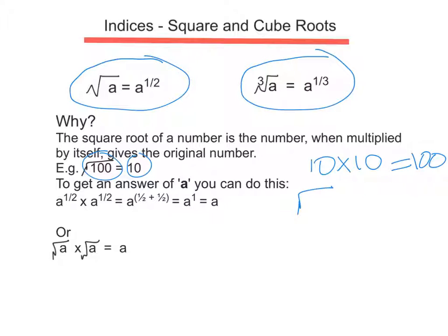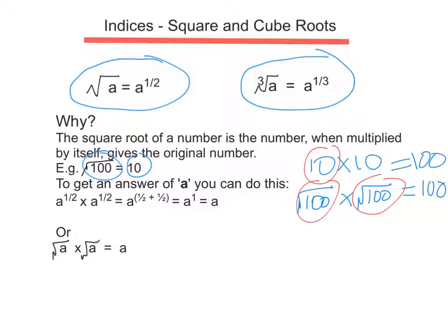I could also write it this way: the square root of 100 times the square root of 100 equals 100. So therefore the square root of 100, which is the same as 10, equals 100. At the bottom of the page you can see that we've actually got the same thing but using the symbol a. The square root of a times the square root of a is equal to a. Now another way of writing that is a to the half power multiplied by a to the half power.